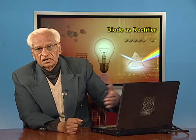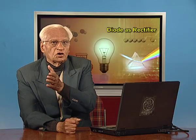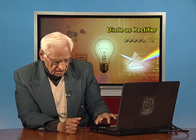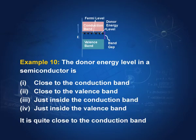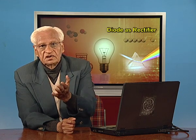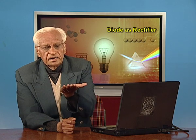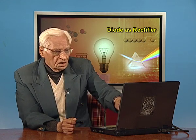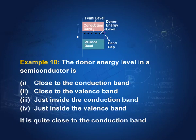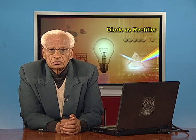The donor energy level in a semiconductor is near the conduction band. The donor is a pentavalent impurity that donates one free electron, and since that electron is free, its energy is close to the conduction band. The acceptor energy level is close to the valence band, because electrons from the valence band can fill these holes, creating more holes in the valence band and thereby contributing to current.